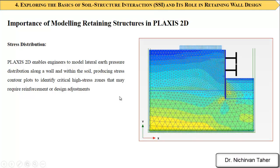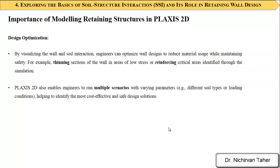Another benefit is stress distribution behind the retaining wall. Using Plaxis 2D, you can estimate the lateral and vertical earth pressure behind the wall. The program produces stress contour plots that can identify critical high-stress zones that may require reinforcement or design adjustments. This also supports design optimization, as the stress contours reveal which areas need more reinforcement.